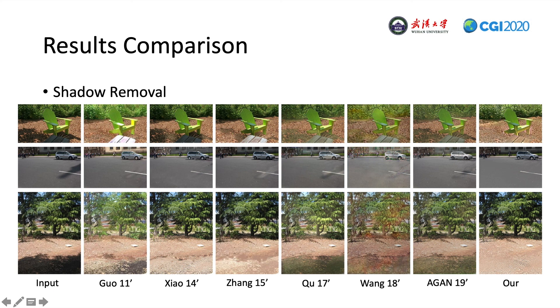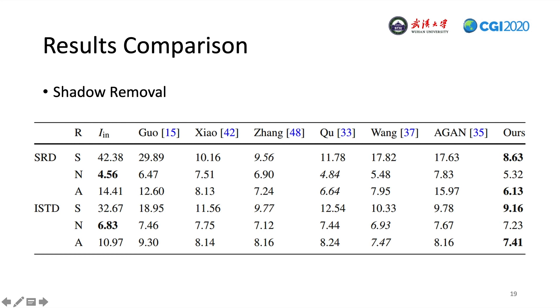In this table, we can see the quantitative comparison on shadow removal using the RMSE in the LAB color space. We evaluate the performance of different methods on shadow region, non-shadow region, and the whole image. The results demonstrate that our removal results performed better for illumination recovery in the shadow regions and have the smallest difference from ground truth shadow-free images.